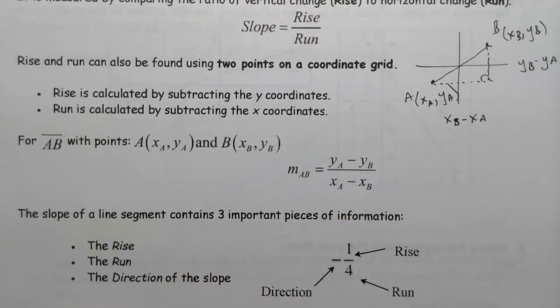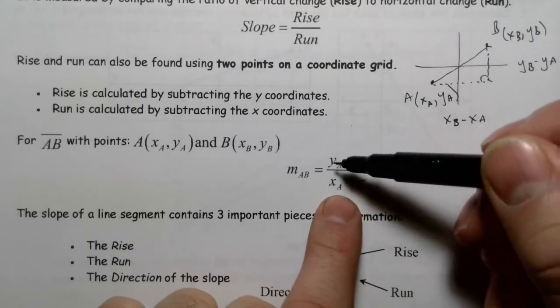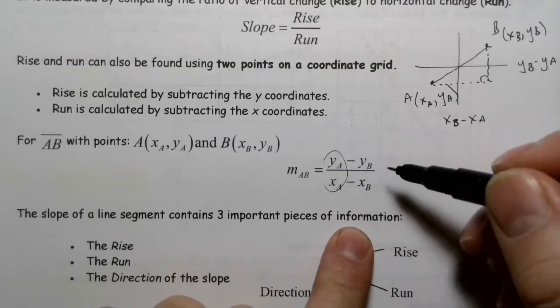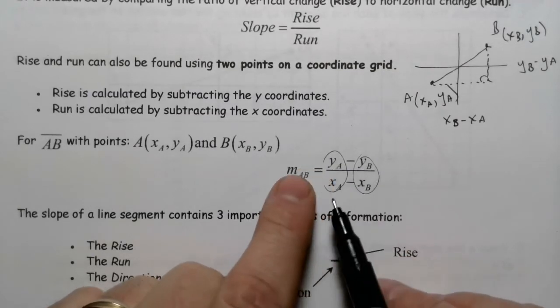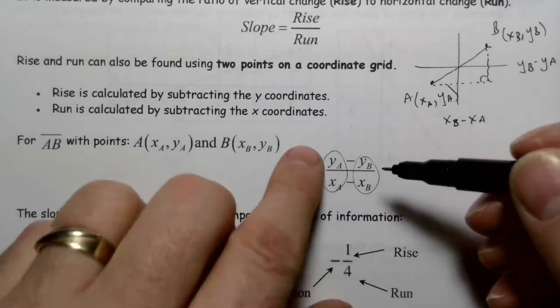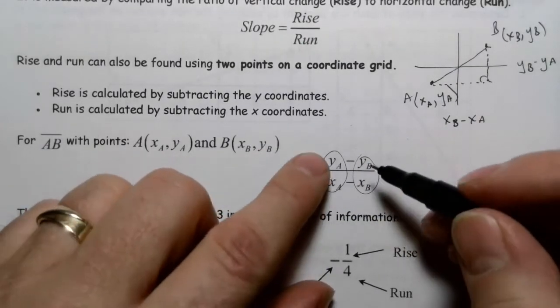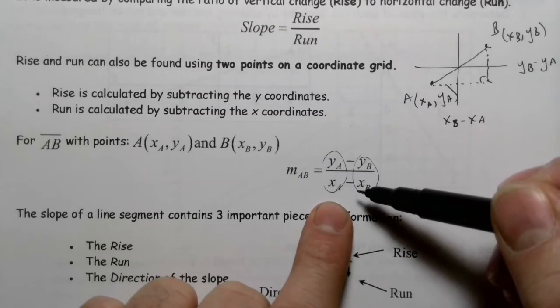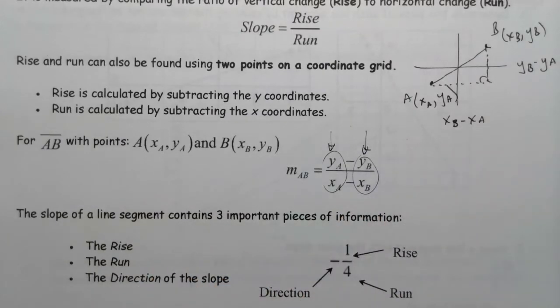You'll notice my letters here are backwards to what we're seeing here, but it doesn't really matter. As long as the point that I pick, its coordinates come first, and then the second point comes second. One of the more common mistakes people make is they compare the coordinates of a point over top of each other. It needs to be y minus y over x minus x.